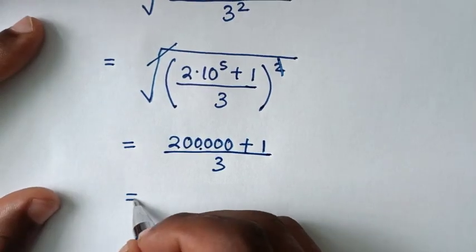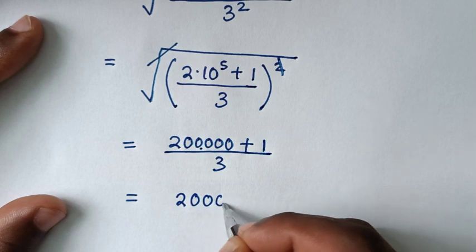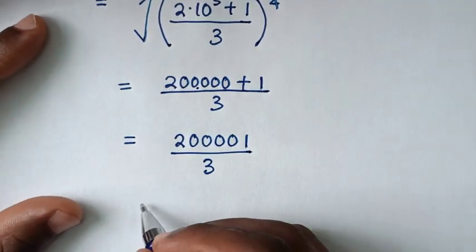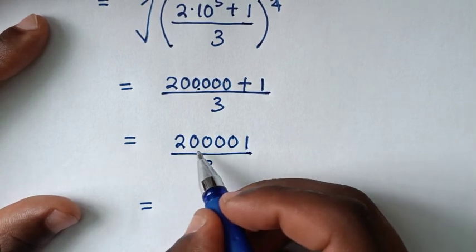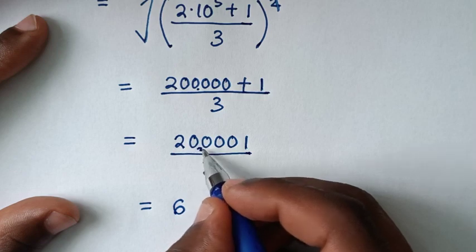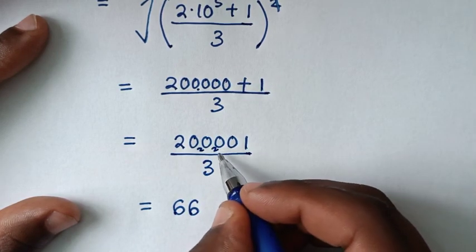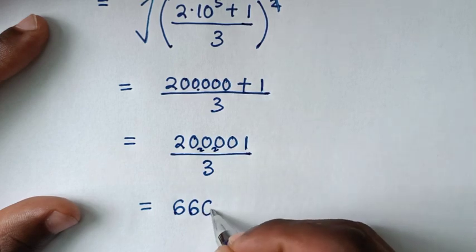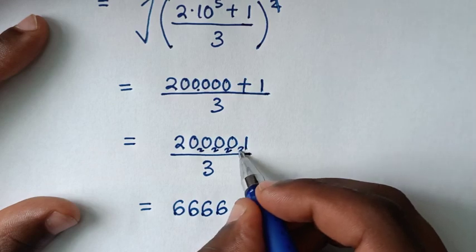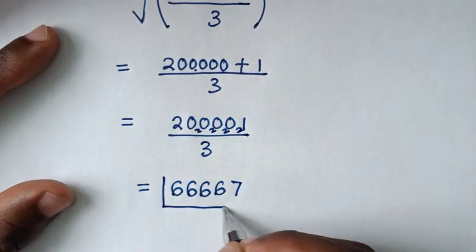So it will be equal to 200001 over 3. Dividing: 20 divided by 3 is 6 remainder 2; 20 divided by 3 is 6 remainder 2; 20 divided by 3 is 6 remainder 2; 20 divided by 3 is 6 remainder 2; then 21 divided by 3 is 7. So this gives us 66667 — wait, the final answer is 666667.